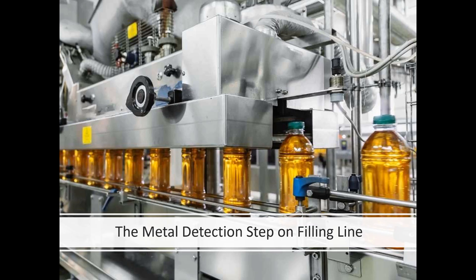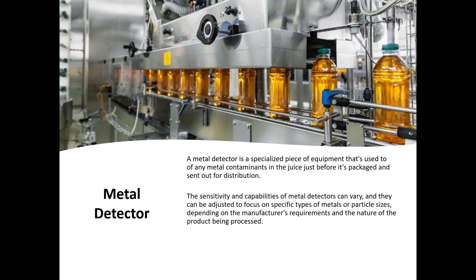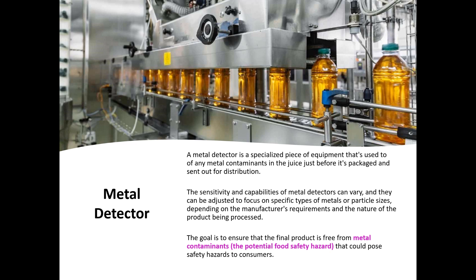If you work in a company where there's a filling line, there is a high probability that you have a metal detector. A metal detection step on a filling line is frequently a CCP. A metal detector is a specialized piece of equipment used to check for metal contaminants — in juices, for example. This image is of an apple juice filling line. Metal detectors, depending on what product is being filled, will have a different level of sensitivity and capability for detecting different types of metal particles. The goal is to ensure that the final product is free from metal contaminants, because that would be a potential food safety hazard to the consumer.